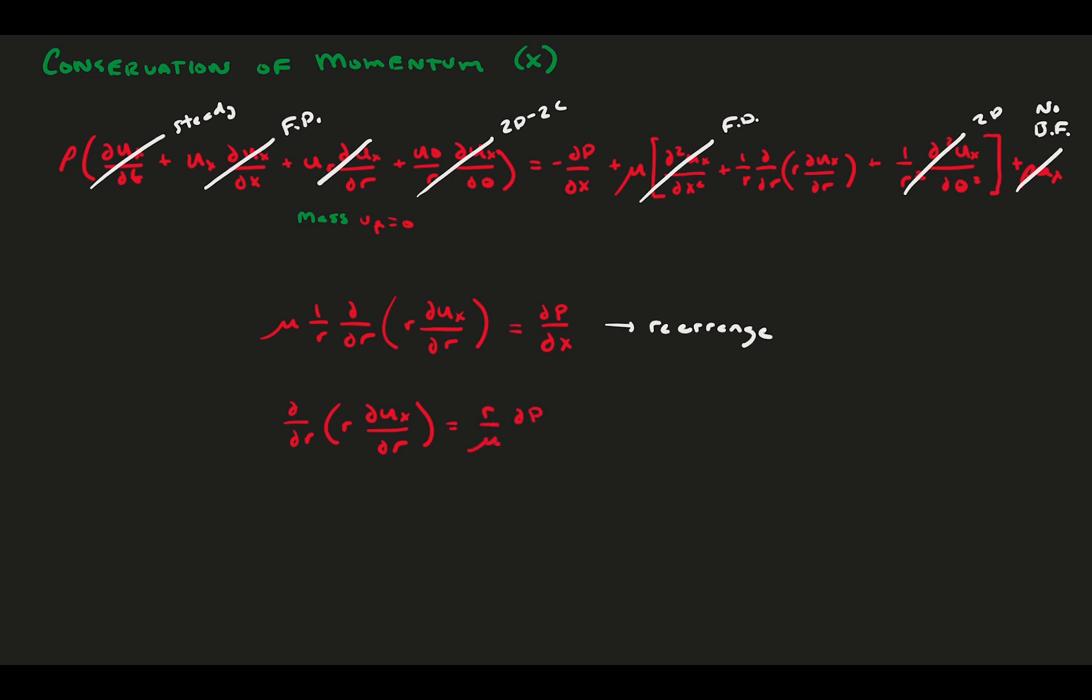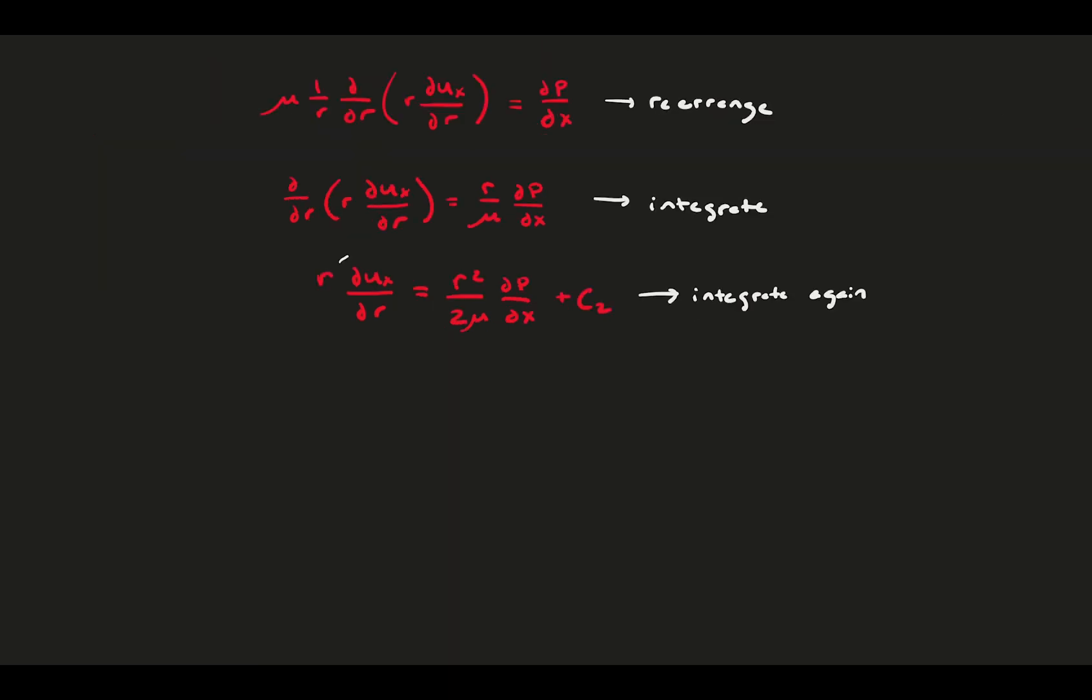Reorganize this, putting an r and mu on the right-hand side. Integrate once to get our first constant of integration. Move the r over to the right-hand side and then integrate again. Note here that the constant c2 gets a 1 over r in front of it when the r moves over to the right-hand side, and the integral of 1 over r is the natural log of r. After our second integration, we get an expression for velocity with two unknown constants. Here, we can make use of our super-obvious boundary condition that the velocity cannot go to infinity. If we inspect our expression for u_x, we notice that if r goes to zero, the term with c2 blows up to infinity. So we must conclude that c2 is zero. It is the only way to prevent the equation from exploding.